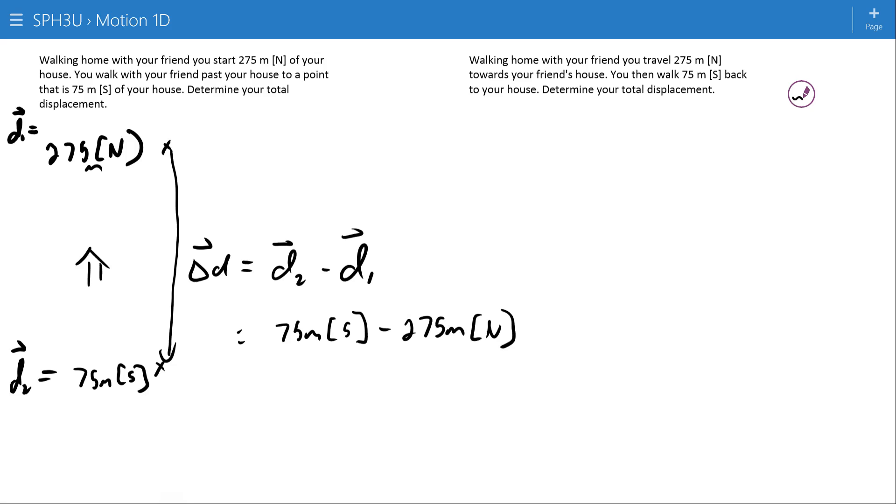This is an example where maybe it's a little bit easier to use south as the positive direction, but what I'm going to do instead is I'm going to stick with my normal north as positive. It doesn't make that big of a difference, and then maybe the consistency of always doing the same thing is worth it. So negative 75 meters north minus 275 meters north.